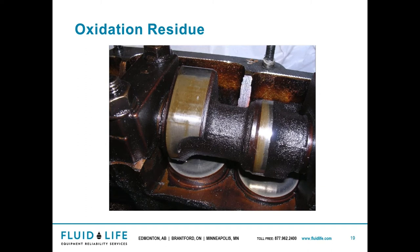Oxidization residue usually looks like a black or dark brown color, as you can see on these surfaces here. It's basically caused by high temperatures, oxygen, wear metals, and water — all of those are able to increase your oxidization rate. A general rule of thumb: above 60 degrees Celsius, every increase of 10 degrees Celsius in temperature above that 60 will double the oxidization rate of oil — essentially cutting the life of your oil in half.